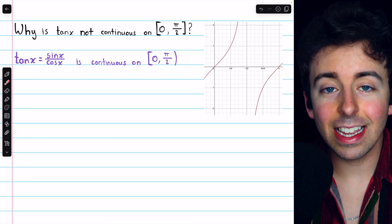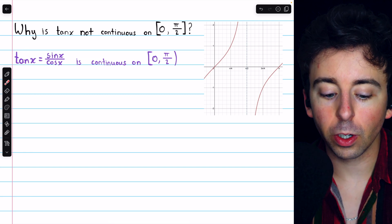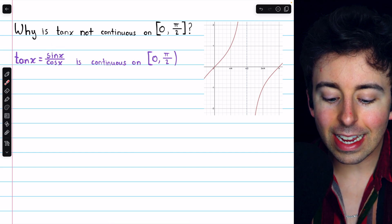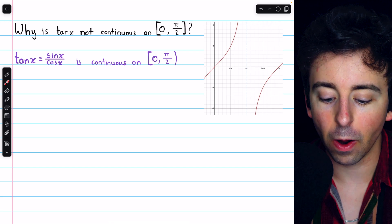And in fact, that is the crux of the problem. The tangent function, tan x, which you should also recall is equal to sine x divided by cosine x, is continuous on the half-closed interval from 0 to pi over 2.